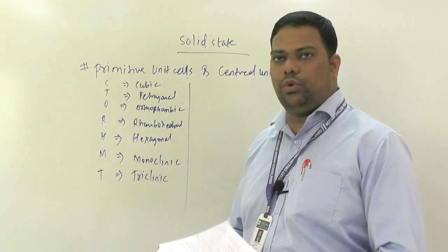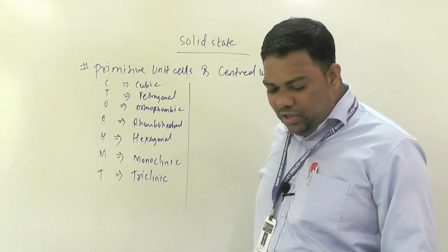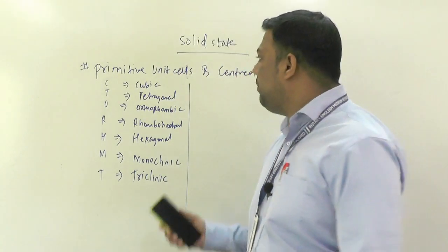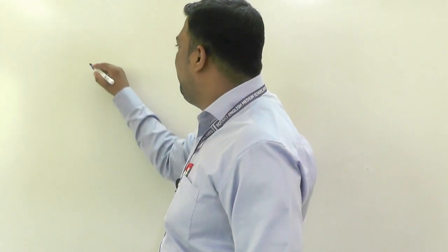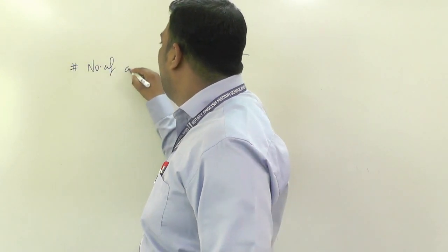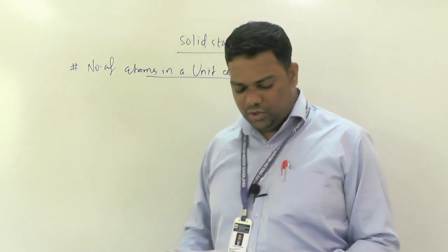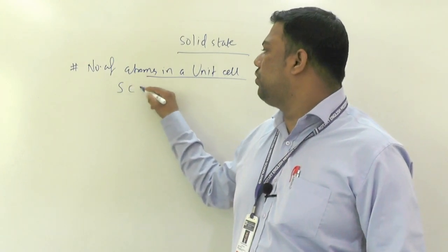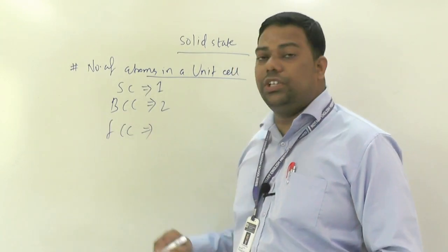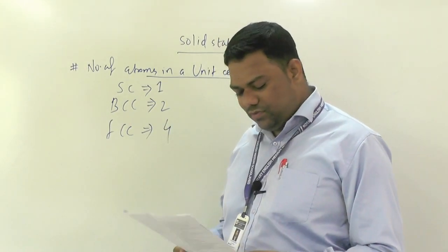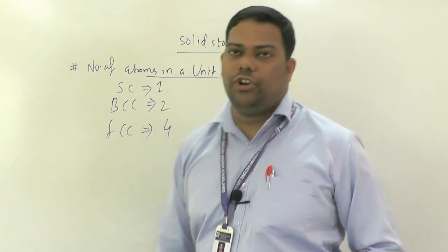It is a very easy method to memorize all seven crystal systems. After primitive and centered unit cells, we deal with the number of atoms in a unit cell. In simple cubic — 1; in BCC — 2; in FCC, HCP, and CCP — 4. This you must know. Without that you can't go further in solid state — this number of atoms in unit cell is a basic criterion.